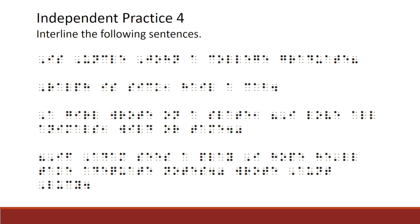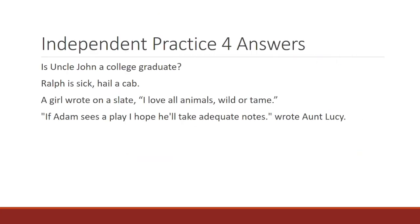Here is independent practice 4, written in braille font. Interline all of the following sentences. When you have finished, move on to the next slide. Here are the answers to independent practice 4, written in print font. The first sentence: Is Uncle John a college graduate, question mark? Ralph is sick, comma, hail a cab, period. A girl wrote on a slate, comma, open quote. I love all animals, comma, wild or tame, period, end quote. Open quote. If Adam sees a play, I hope he'll take adequate notes, period, closed quote, wrote Aunt Lucy, period.